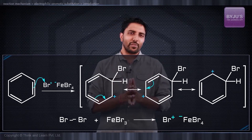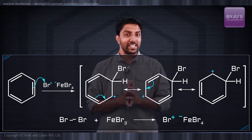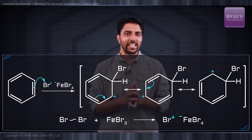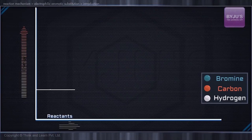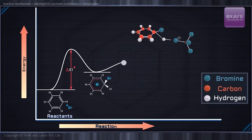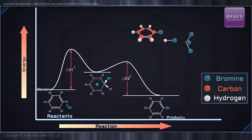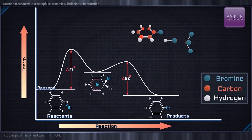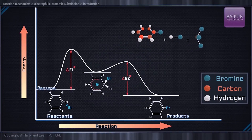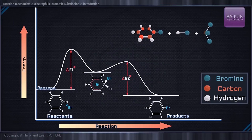Thus, the reaction of an electrophile with a benzene ring is endergonic, entailing a substantial energy barrier. Overall, this reaction is rather slow. Putting together all these factors, the formation of this cationic intermediate should be the rate-determining step.